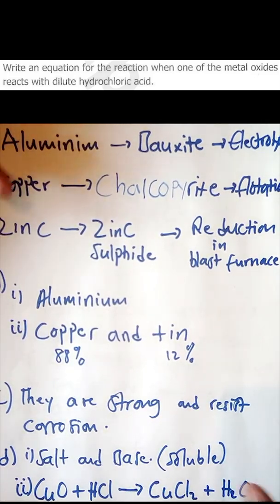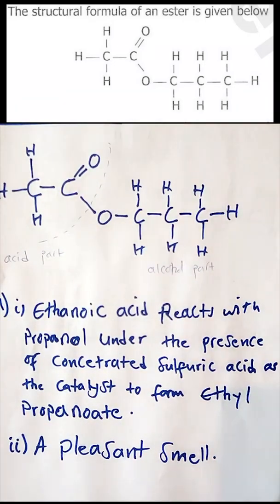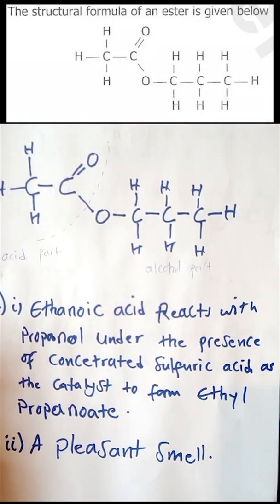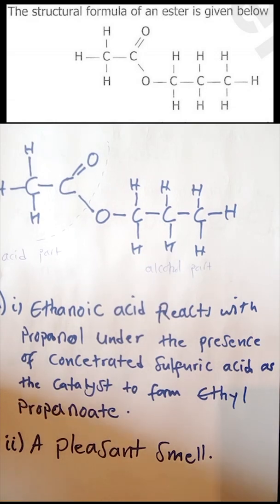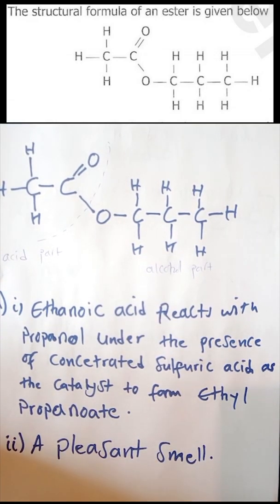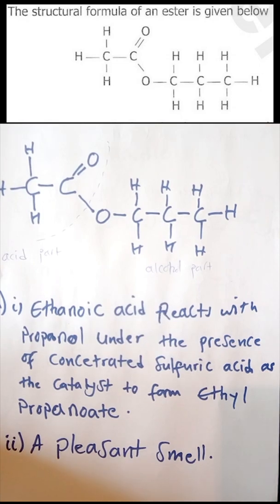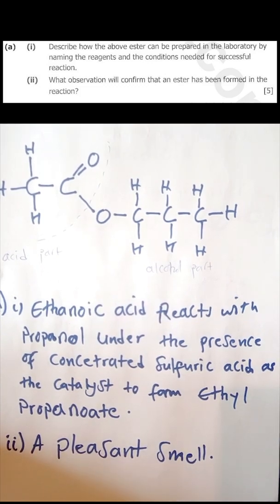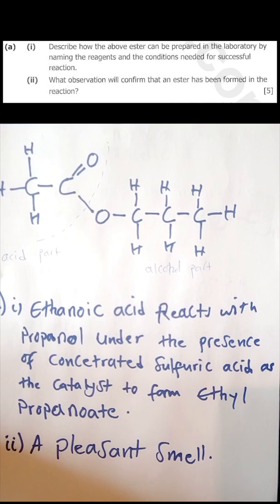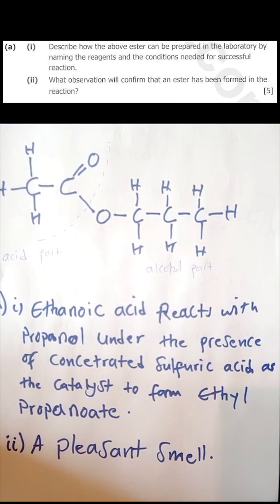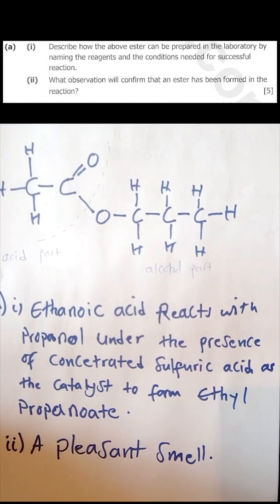Moving to the last question, question 12, which is about organic chemistry — a topic that never misses in a chemistry exam. The structure given is an ester. Question a asks you to describe how the ester can be prepared in the laboratory by naming the reagents and conditions needed for a successful reaction.